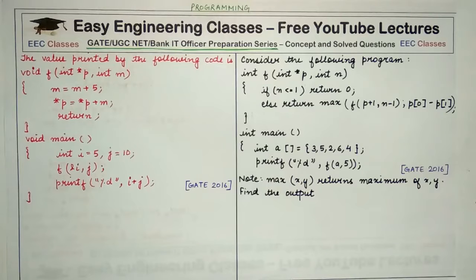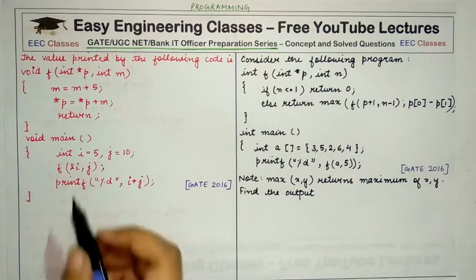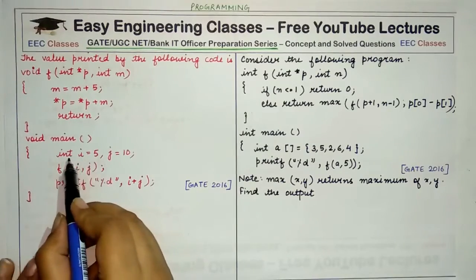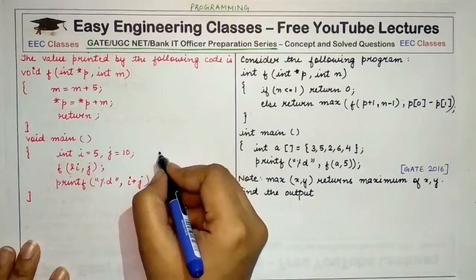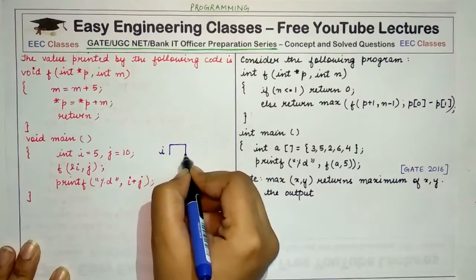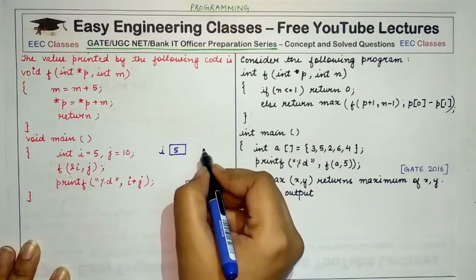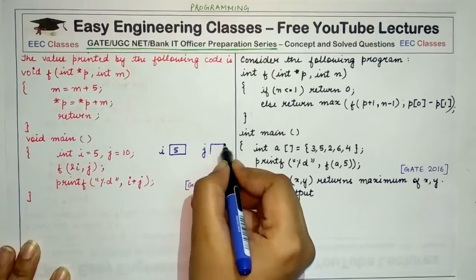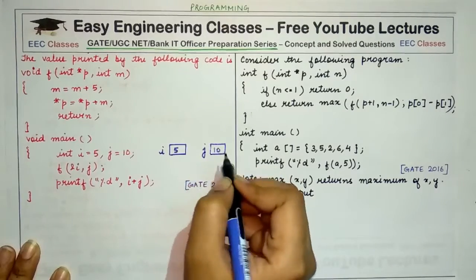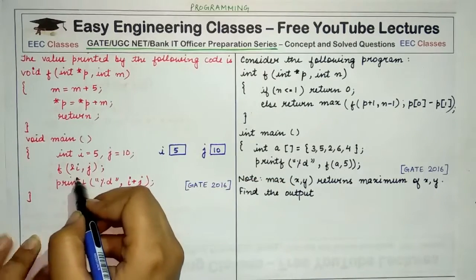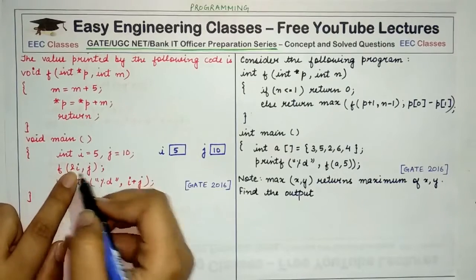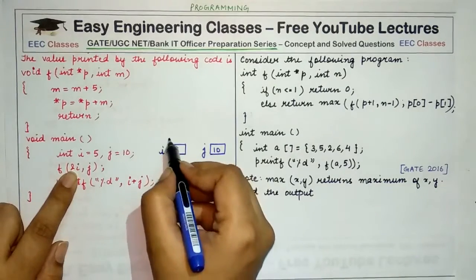In the first question, you have to find out the value that would be printed by the following code. You are given a function f and a void main. Starting with void main, there is a variable i whose initial value is 5 and a variable j whose initial value is 10. The function f is called by passing the address of i.